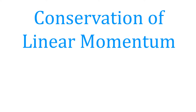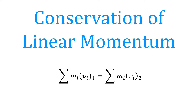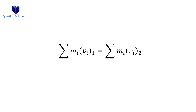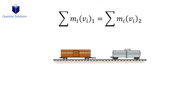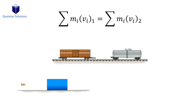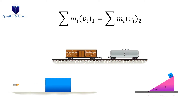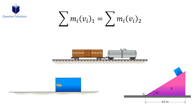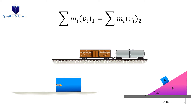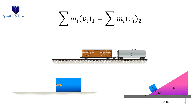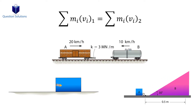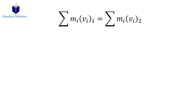Let's take a look at the conservation of linear momentum. The big equation in this chapter states that the total linear momentum for particles in a system is constant from the beginning time period to the final time period. We can use this when we have particles that collide with each other.